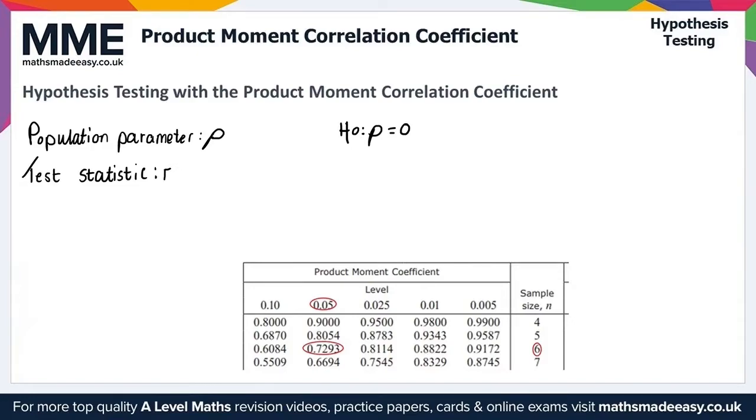Now our H1 will change depending on whether we're working with a one-tailed test or a two-tailed test. So if we denote a one-tailed test here in red, we have two possible options here. We have H1 using again the population parameter rho here is either greater than zero or H1 using the population parameter rho is less than zero. So those are the two possible options there for a one-tailed test.